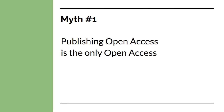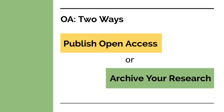Let's go over a few open access myths. The first is that publishing open access is the only way to do open access — this isn't true. You can do open access in two ways: either by publishing in open access journals, or by archiving your research. Publishing open access is sometimes called gold open access, and archiving is called green open access. Archiving your research allows you to be an open researcher while maintaining your current publishing practices, which can help if you need to meet expectations to publish or there are not yet open access journals in your research area.